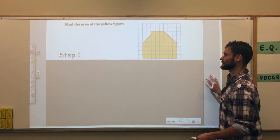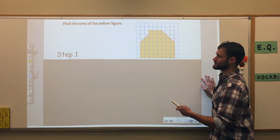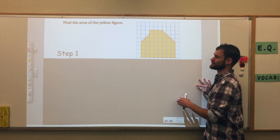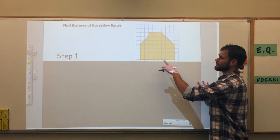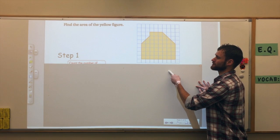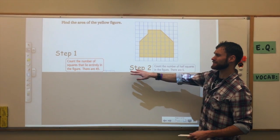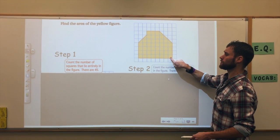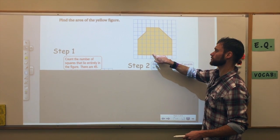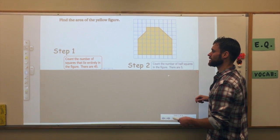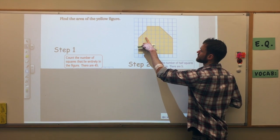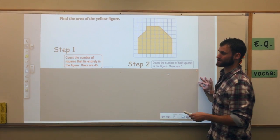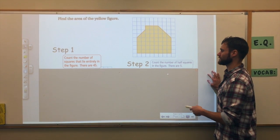It's made up of a couple of different things. The easiest way to start when finding area on a grid like this — we don't have any units, no inches or feet, but we do have little grid blocks. So step one is to simply count the number of squares that lie entirely in the figure. These are all whole units. We're not going to count the partial ones because those are not whole units. There are 45 whole ones altogether.